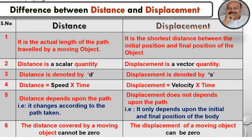Difference between distance and displacement. Distance: It is the actual length of the path traveled by a moving object. Displacement: It is the shortest distance between the initial position and final position of the object. Distance is a scalar quantity. Displacement is a vector quantity.